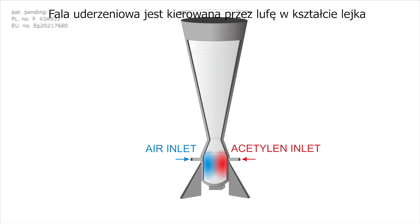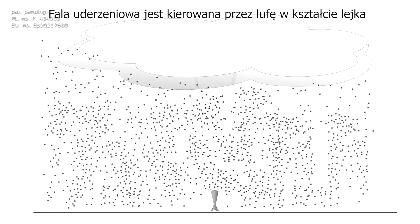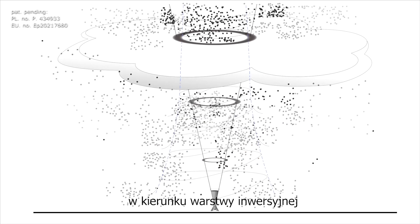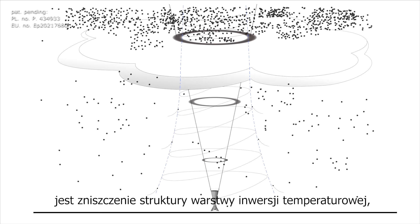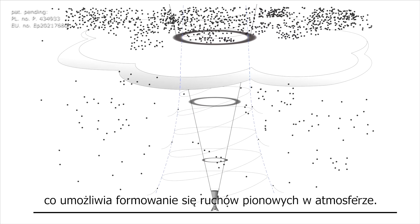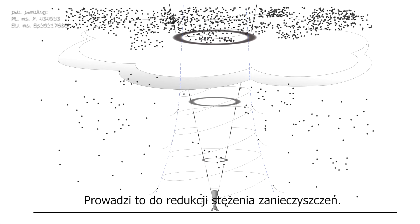The created shock wave is directed through a funnel-shaped barrel towards the inversion layer. The result of the shock wave impact is the destruction of the atmospheric temperature inversion layer, which enables the formation of vertical movements of the atmosphere leading to a reduced concentration of air pollution.